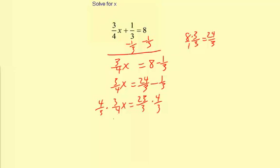So let's see. 4 times 3 is 12. 3 times 4 is 12. x equals 23 times 4. Carry the 1. That's 92. 92/3.